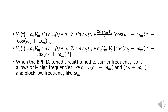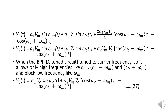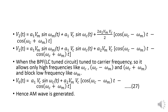When the bandpass filter — that is the LC tuned circuit — is tuned to the carrier frequency, it allows only the higher frequencies like ωc, (ωc−ωm), and (ωc+ωm), and blocks the lower frequency ωm. Therefore, V0(t) = A1·Vc·sin(ωc·t) + A2·Vm·Vc·cos((ωc−ωm)·t) − A2·Vm·Vc·cos((ωc+ωm)·t). In this way we generate our amplitude modulation wave.